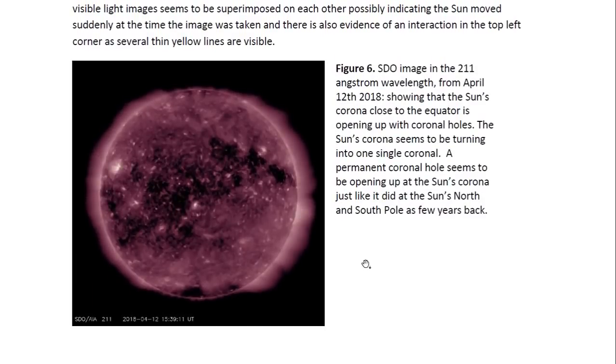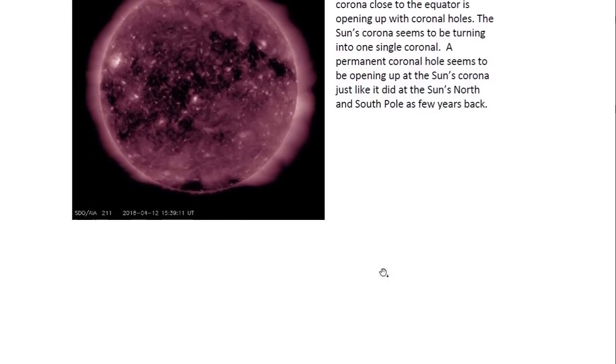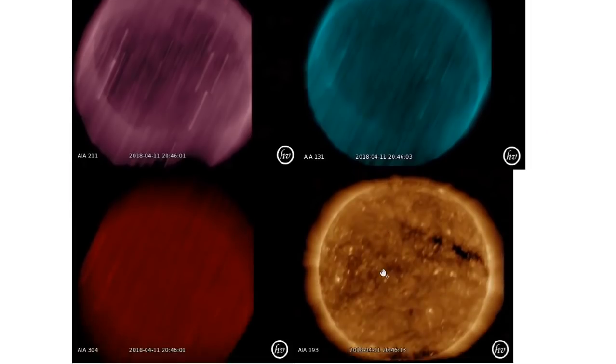Now this is an image of the sun from yesterday, this is from April 12th in the 211 where we can most clearly see the corona. You can see how small the corona is getting. The sun did get a permanent coronal hole at the North Pole and another one at the South Pole a few years ago. And it seems to be opening up into a permanent coronal hole at the equator now. And therefore this shows how the sun is progressively getting weaker, how it's losing its corona basically as a result of the stellar cores drawing matter from it. And I've written about that in several articles.